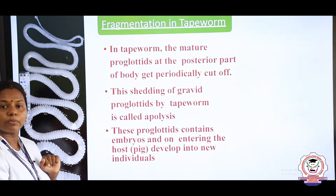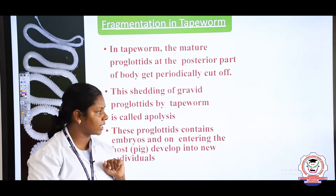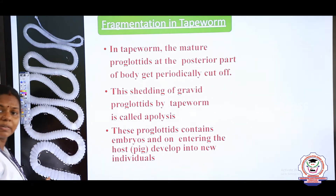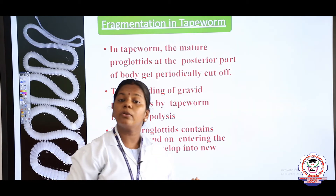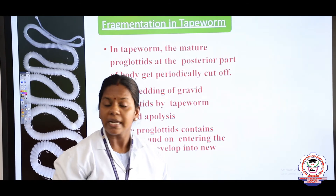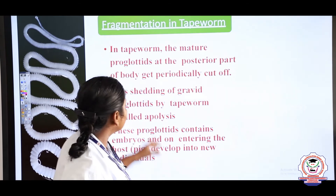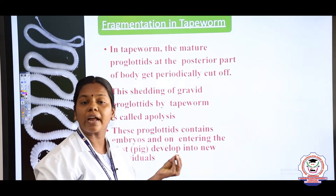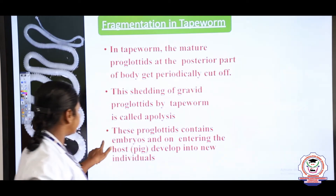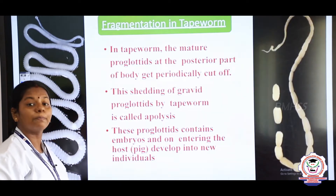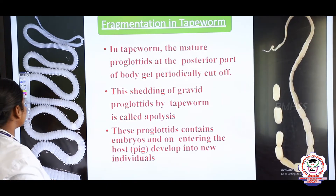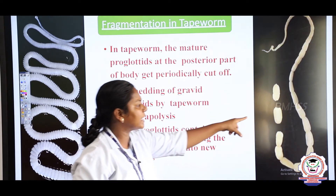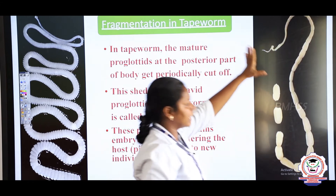Fragmentation in tapeworm — the tapeworm is an internal parasite (endoparasite) present inside our intestine. The fragments of a tapeworm are called proglotids. The tapeworm has many segments throughout its body.